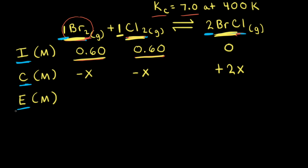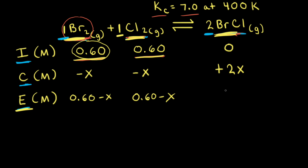Next, let's think about equilibrium concentrations. If the initial concentration of bromine is 0.60 and we're losing x, the equilibrium concentration must be 0.60 minus x. And the same thing for chlorine — it would be 0.60 minus x. For BrCl, we start off with zero and we gained 2x. Therefore, at equilibrium, the equilibrium concentration would be equal to 2x.